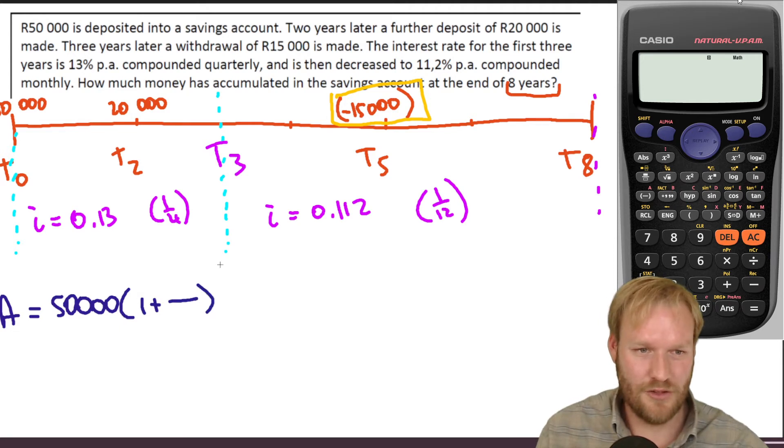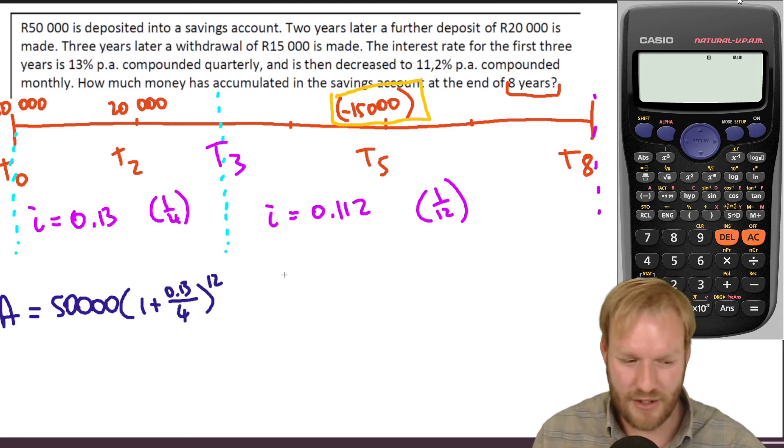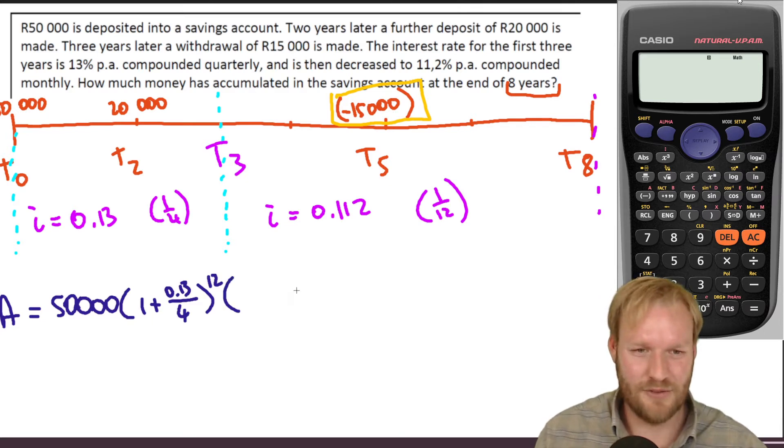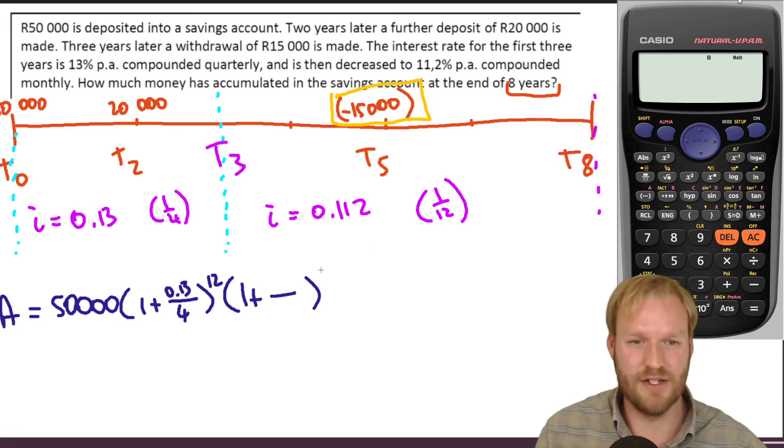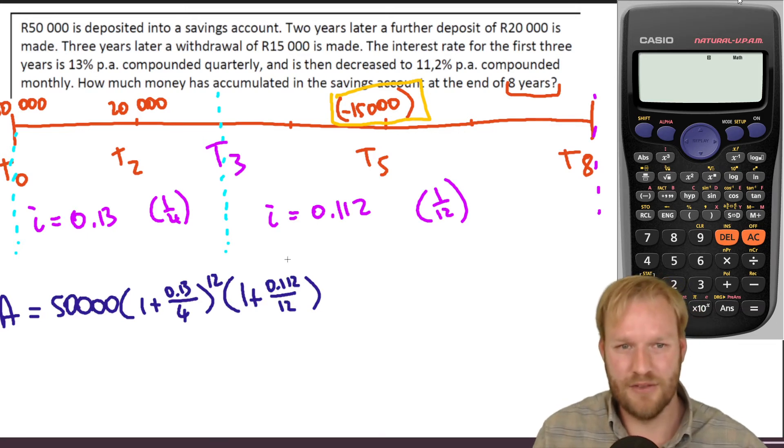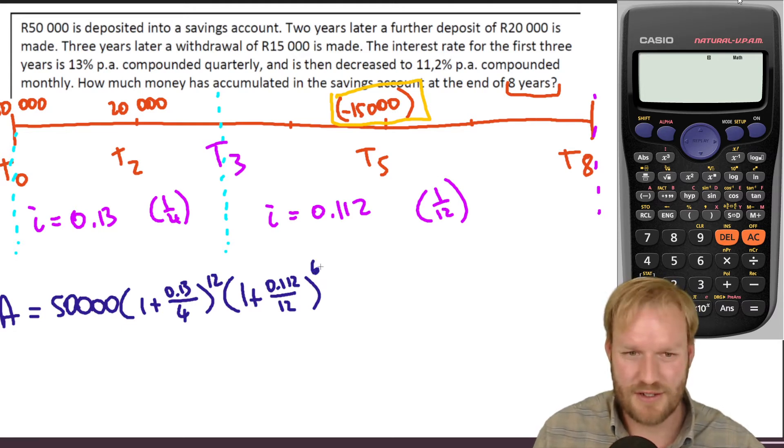So the 50,000 for three years. So for three years, it's going at 0.13 or 13% compounded quarterly. So it's going at 0.13 compounded quarterly for three years, which is 12 quarters. And then after that, that amount is going to carry on for another five years. And this now for five years is going to be going at that percentage, 0.112. And it's monthly, and that's five years, five times 12 gives us 60.